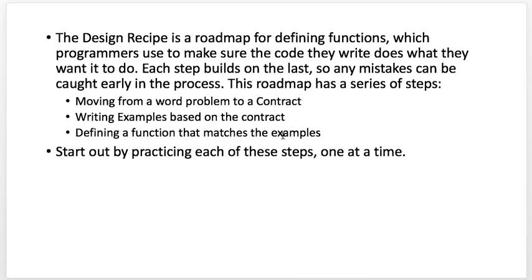Any mistakes can be caught early in the process. Here's the series of steps: moving from a word problem to a contract. We practice that and we'll practice more today — we look at the problem and figure out the parts of the contract. Then we write examples based on that contract and define the function based on the examples. It's always clear, we can go one step at a time.